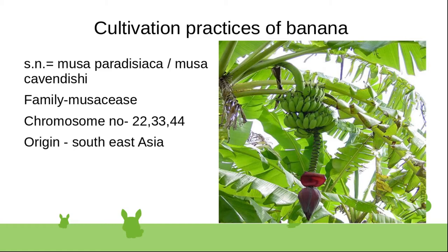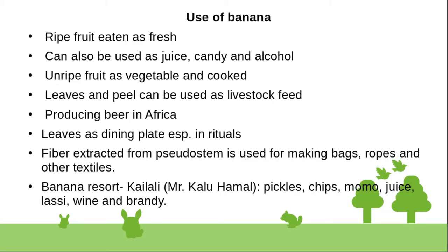The chromosome numbers of banana are 22, 33, and 44. Banana is originated from Southeast Asia. Uses of banana include ripe fruit eaten fresh, used as juice, candy, and alcohol such as brandy. Unripe fruit is used as a vegetable.